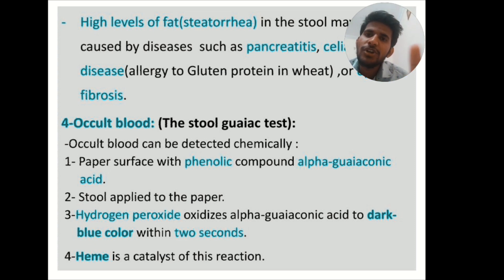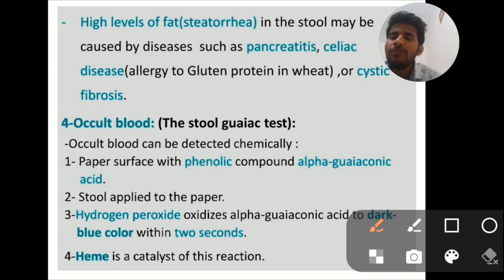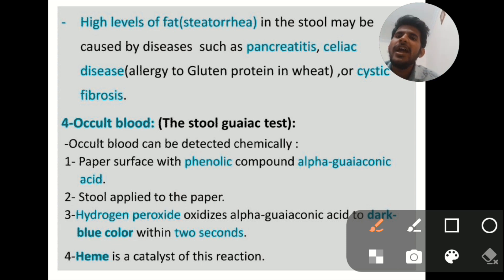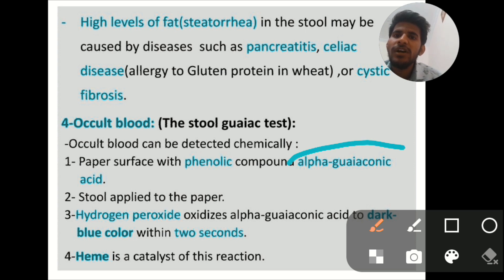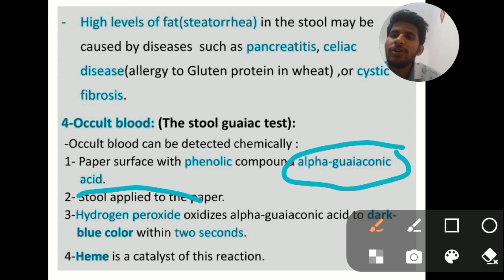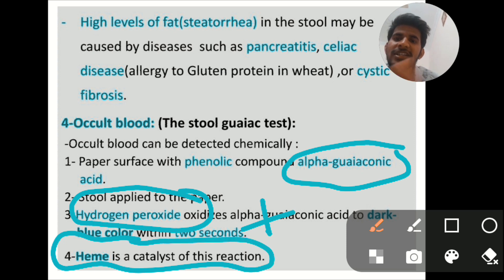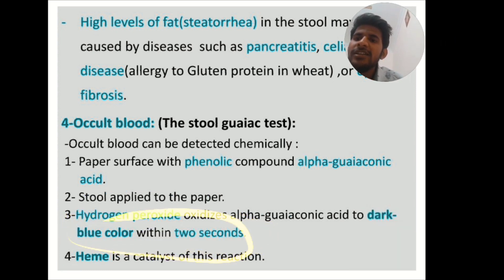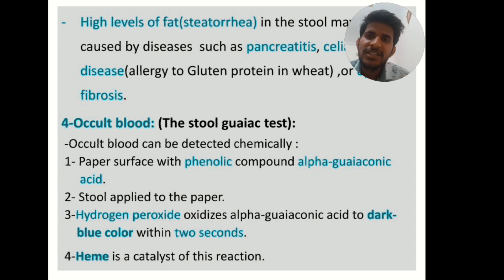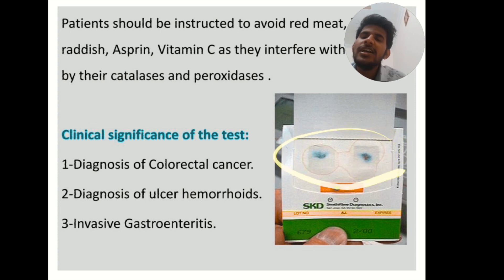For the occult blood test principle: there is a paper card rapid diagnostic test with two boxes. You apply feces to both boxes, then add hydrogen peroxide. The phenolic compound alpha-guaiacol combines with hydrogen peroxide in the presence of heme — which is present in RBCs and acts as a catalyst — leading to a blue color change within 10 minutes. This indicates the presence of blood in the feces.